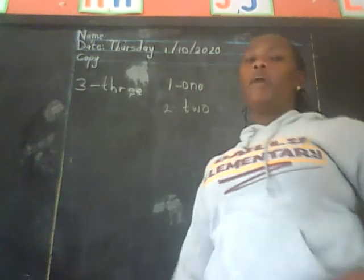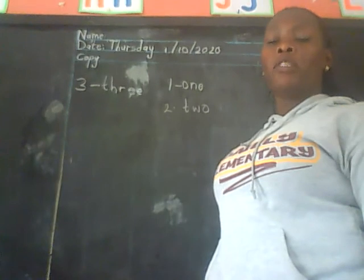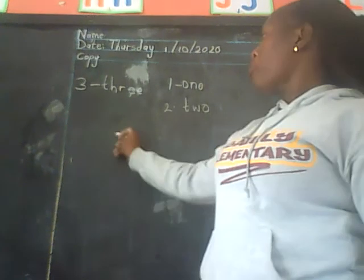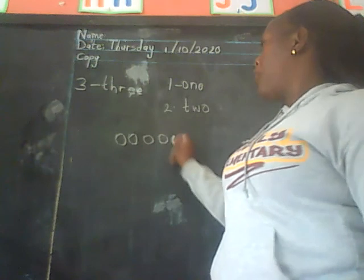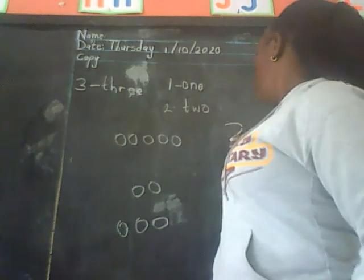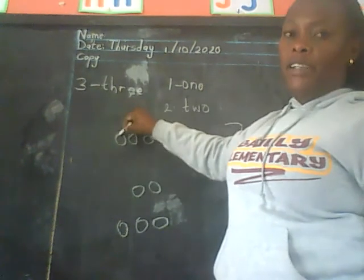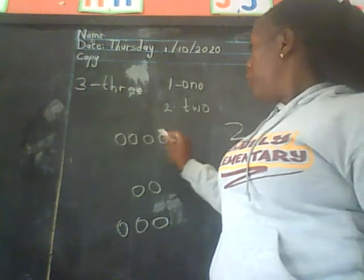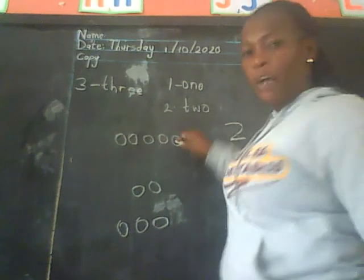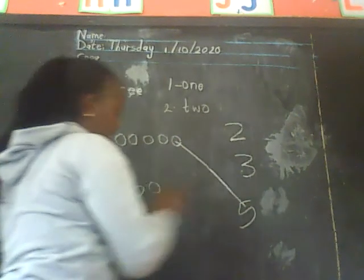So today our work is going to be: copy how to write number 3 in words. Then we remind ourselves the work that we have been doing — drawing the balls. But today it is not going to be drawing balls, but matching balls with the correct number. We count the balls: 1, 2, 3, 4, 5. Where is number 5? Look for number 5. Yes, number 5 is the one to match.